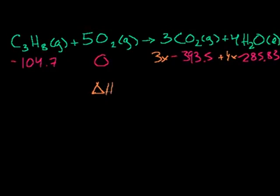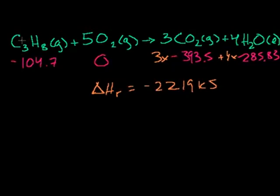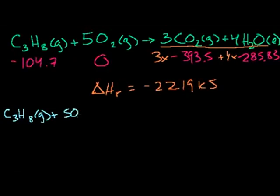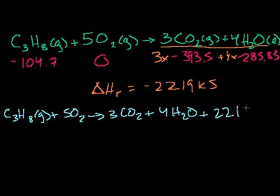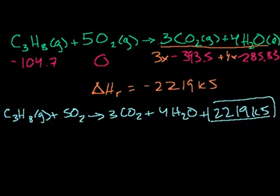So the change in enthalpy — the heat of this reaction — is minus 2219 kilojoules per mole of propane combusted. The reaction is exothermic: we could rewrite it as C3H8 plus 5 O2 yields 3 CO2 plus 4 H2O plus 2219 kilojoules. This side of the reaction has less energy, and that energy got released.